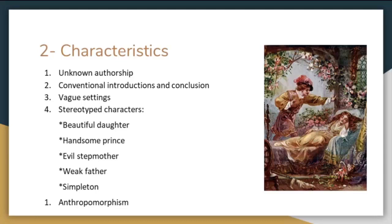Next, we will talk about the characteristics. These are some of the most common characteristics. Unknown authorship — these types of literature have lost their origins. Then conventional introduction and conclusions, which are the phrases "once upon a time" and "they lived happily ever after." Then vague settings, where you don't really know as a reader where the story took place — they just put up a backdrop setting. Then we have stereotyped characters: beautiful daughter, handsome prince, evil stepmother, weak father, and simpleton. Then anthropomorphism, where human characteristics are given to animals, plants, or objects.